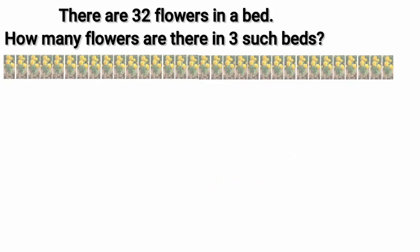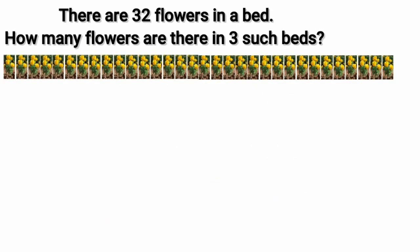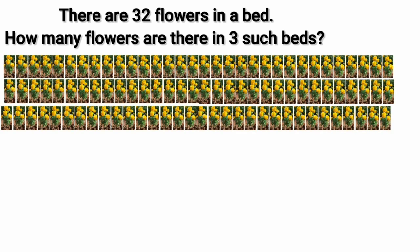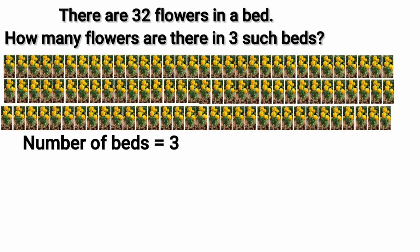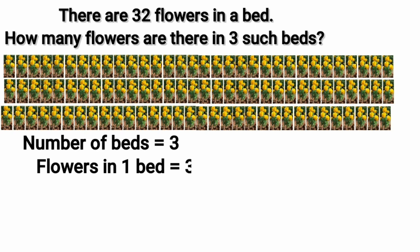Now, from page number 90 — there are 32 flowers in a bed. How many flowers are there in 3 such beds? Number of beds is 3. Flowers in 1 bed is equal to 32. Here we have 3 beds of flowers.